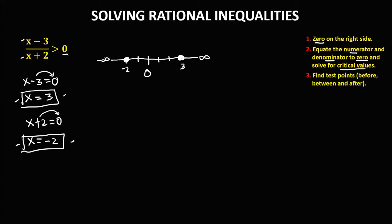Next, find the test points. Before the first critical value (before negative 2), we use negative 3. Between the two critical values, we can use negative 1, 0, 1, or 2 — since 0 is available, I choose 0. After the second critical value, we use positive 4.